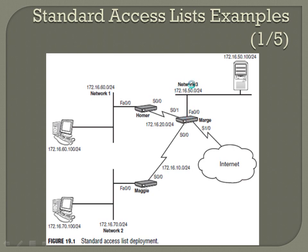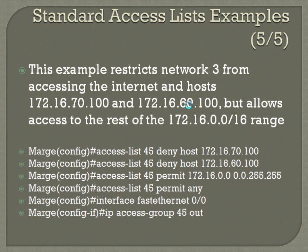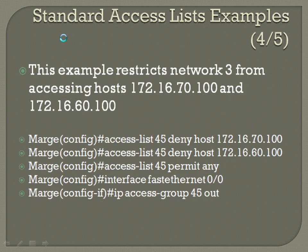The actual access list itself is going to have deny statements for both 172.16.70.100 and 172.16.60.100. So: access-list 45 deny host 172.16.70.100, access-list 45 deny host 172.16.60.100, and then access-list 45 permit any so that you're not blocking all traffic.